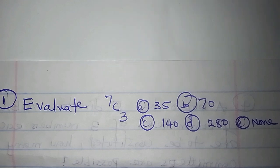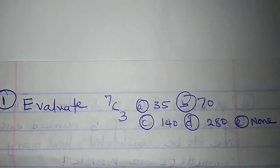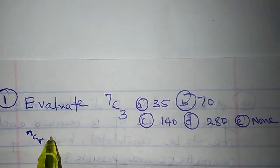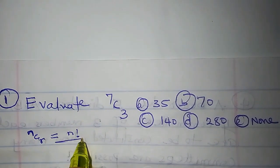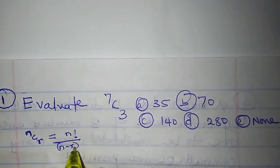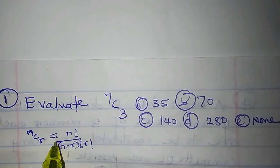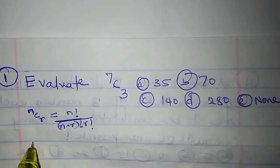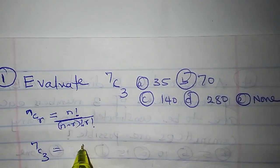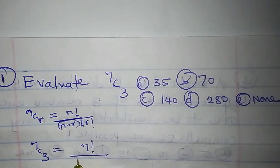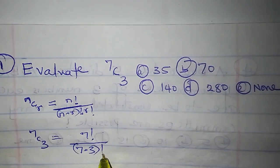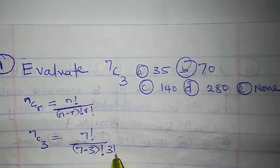The first question says: evaluate seven combination three. Generally, for combination, n combination r is n factorial over (n minus r) factorial times r factorial. So, seven combination three is seven factorial over (seven minus three) factorial times three factorial.